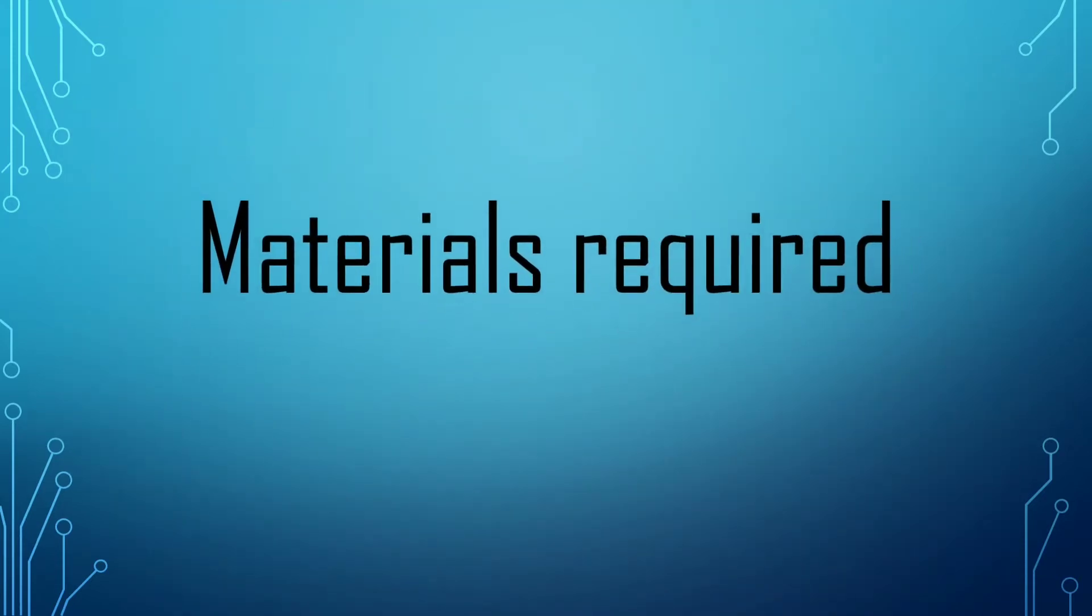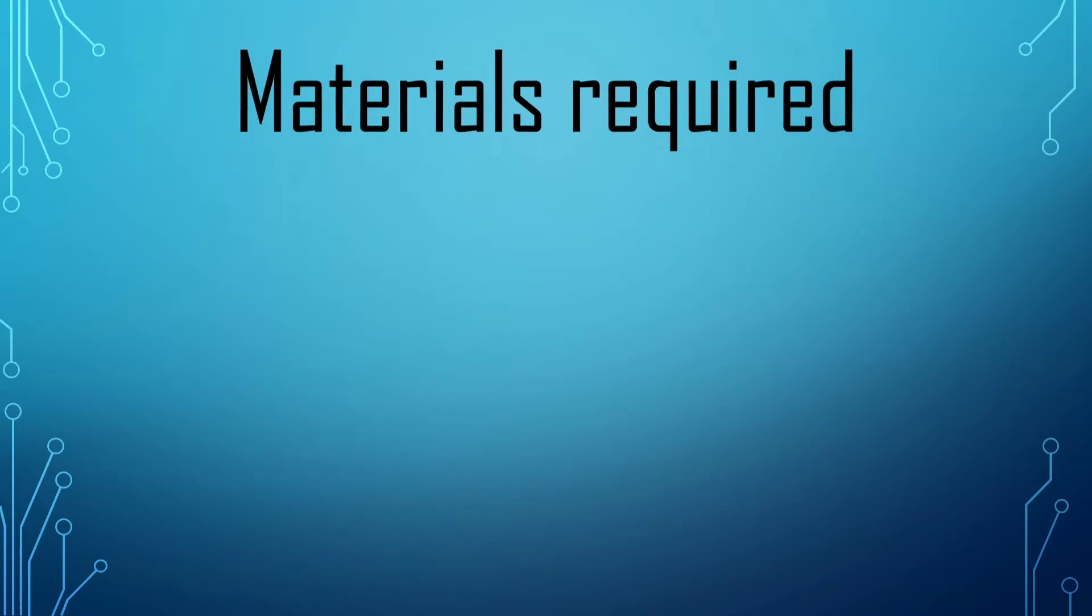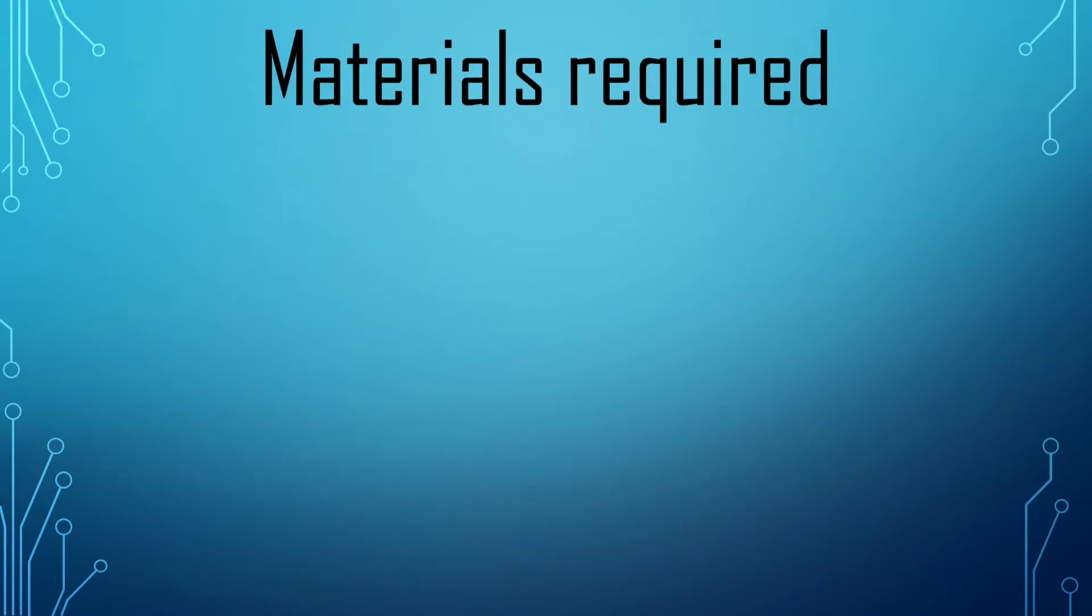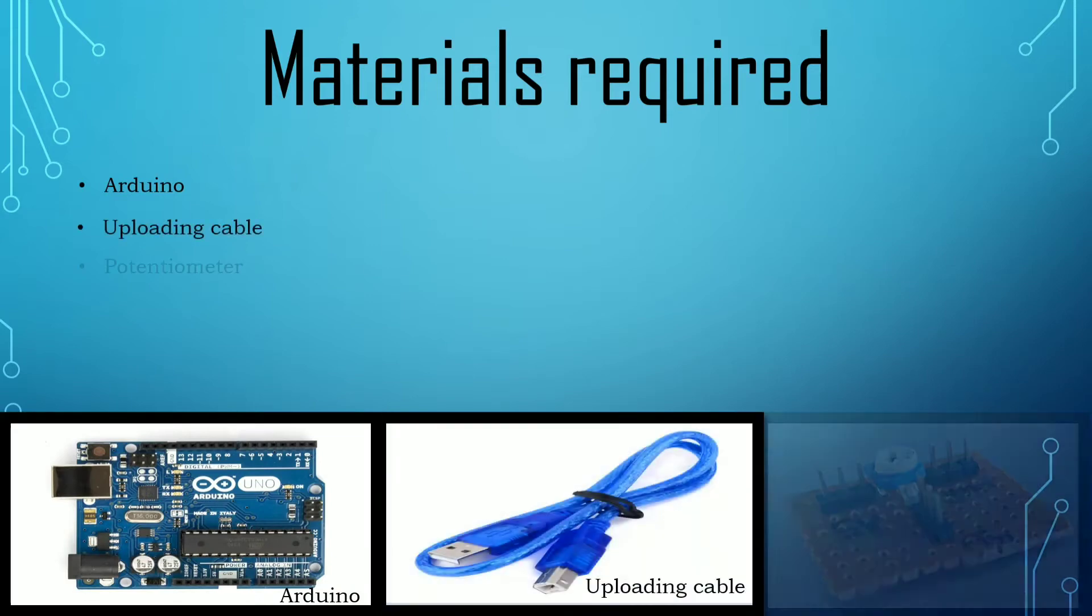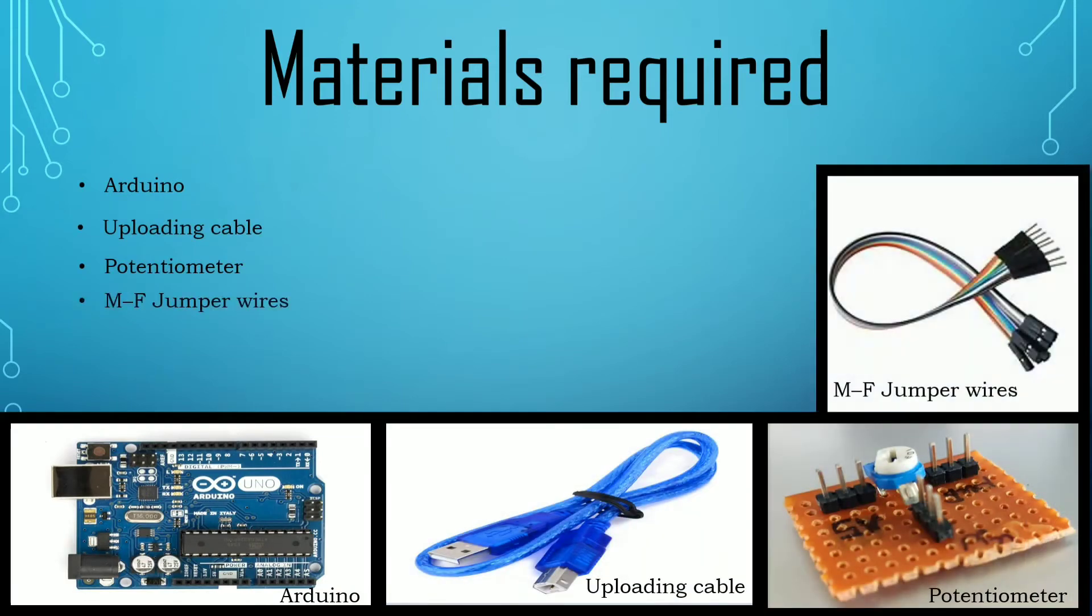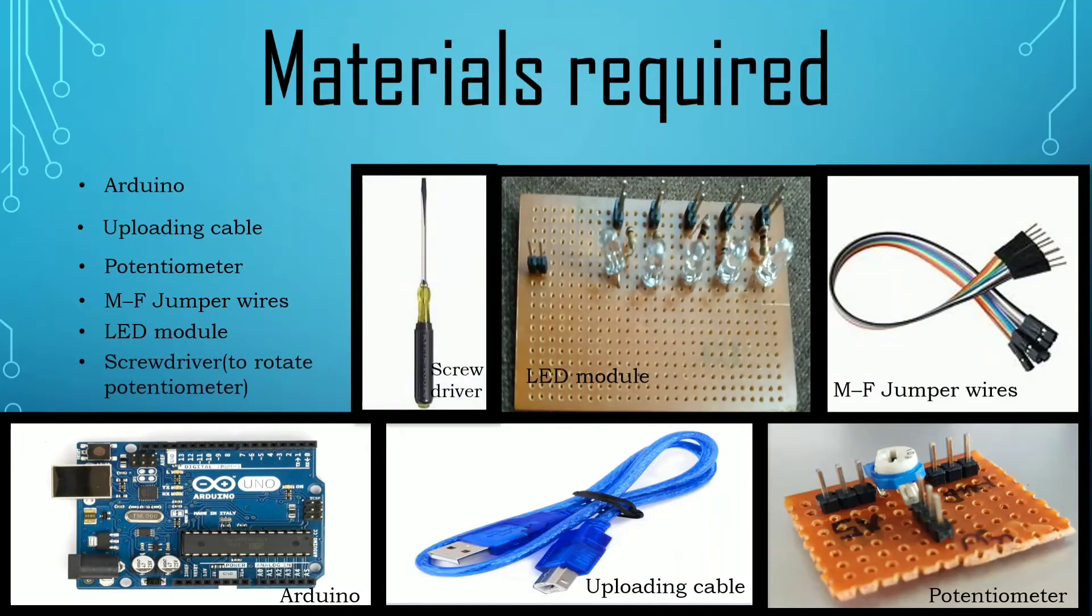Let's get started working on the potentiometer. First we will discuss the materials needed. We will be needing an Arduino, uploading cable, potentiometer, MF jumper wire, LED module and a screwdriver which will be required for the rotation of the potentiometer.